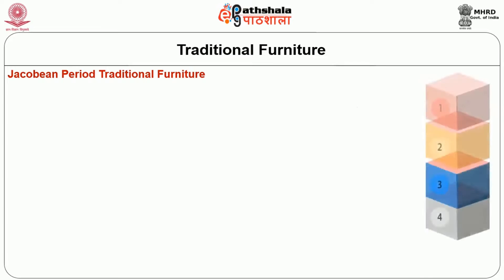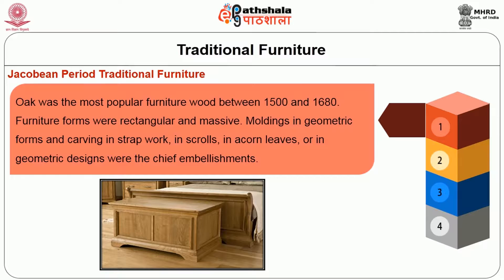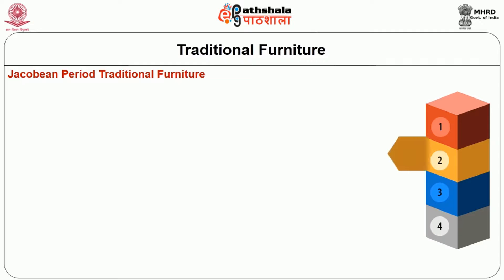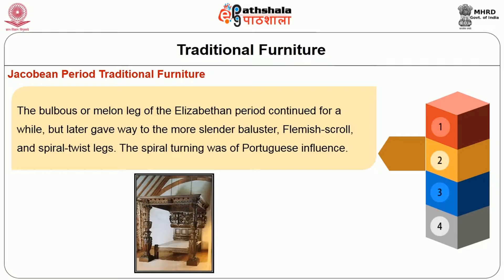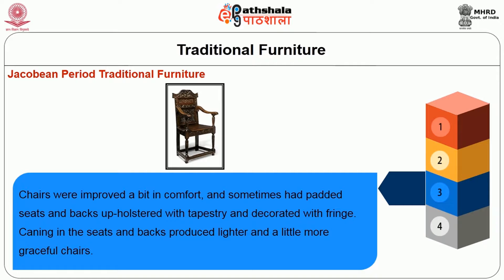Oak was the most popular furniture wood between 1500 to 1680. Furniture forms were rectangular and massive. Moldings in geometric forms and carving in strapwork, in scrolls, in acorn leaves, or in geometric designs were the chief embellishments. The bulbous or melon leg of the Elizabethan period continued for a while but later gave way to the more slender baluster, Flemish scroll, and spiral twist legs. The spiral turning was a Portuguese influence.